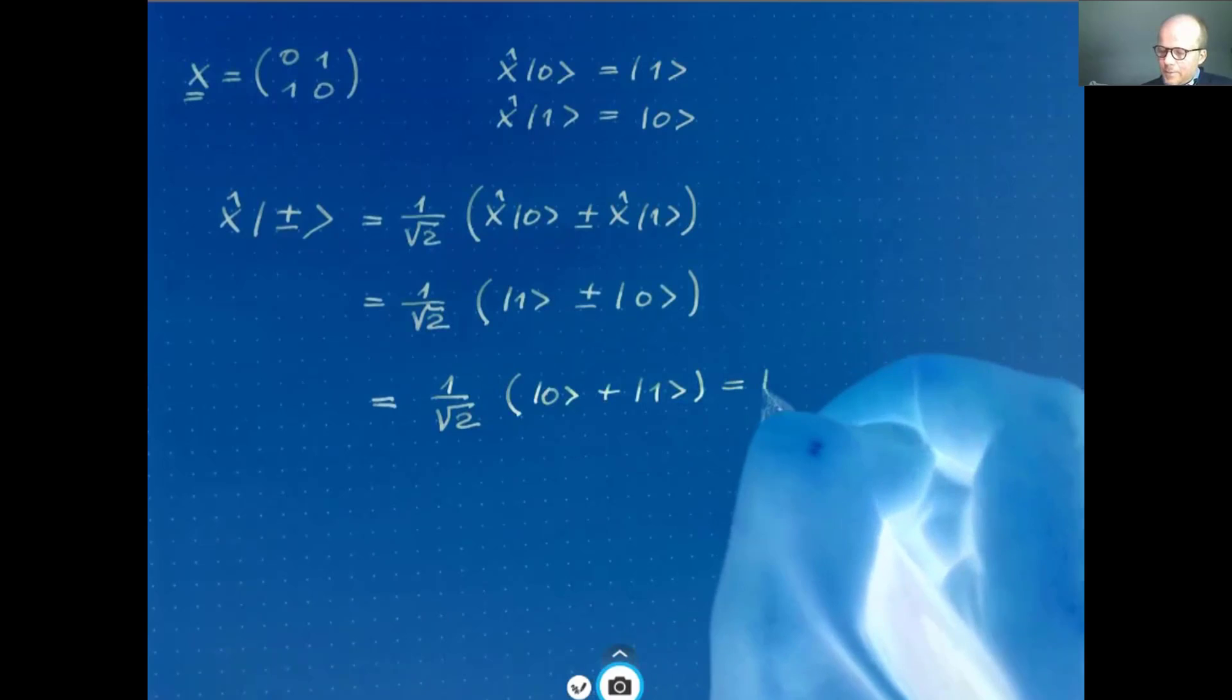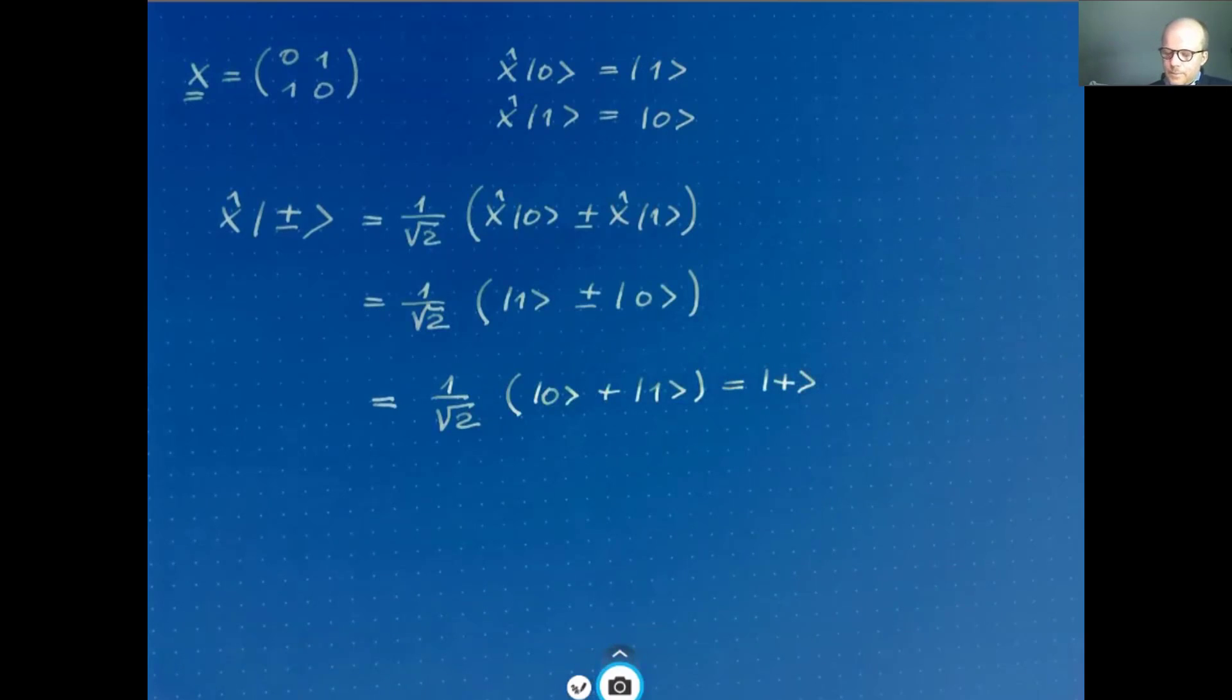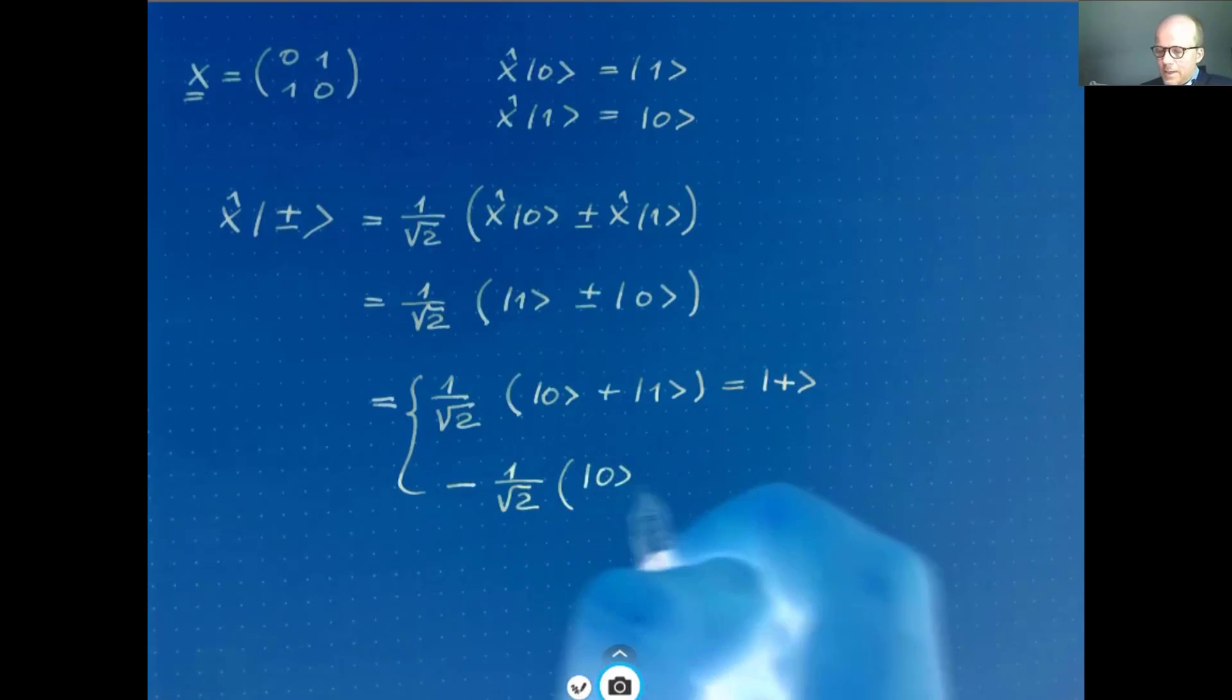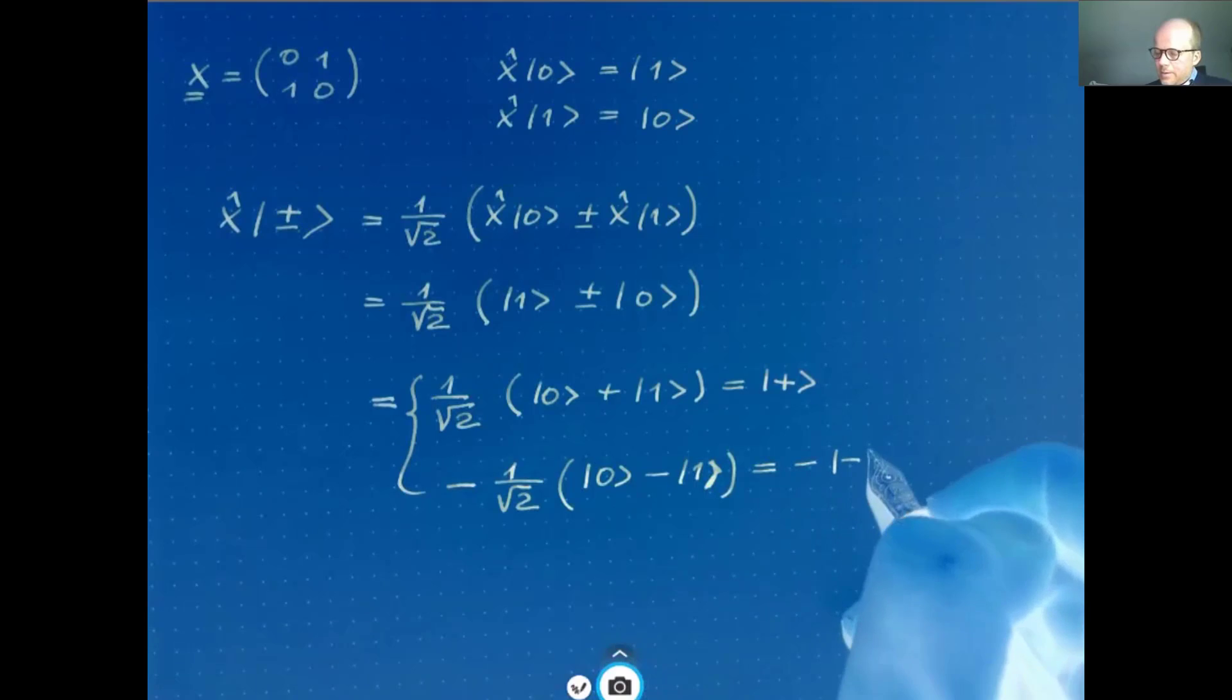Or if we have the lower sign then in the round bracket we have 1 minus 0 which is the same as minus 1 over square root of 2 and then 0 minus 1. And this is minus the minus state. So in short this is plus or minus the plus or the minus state.